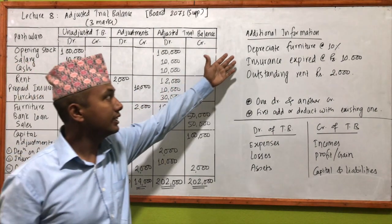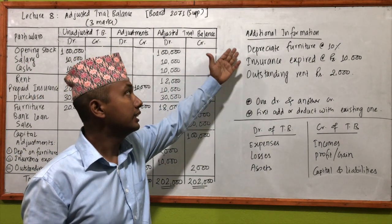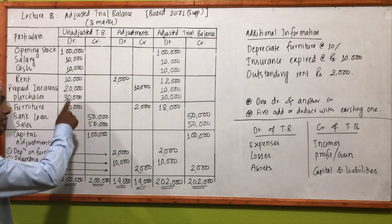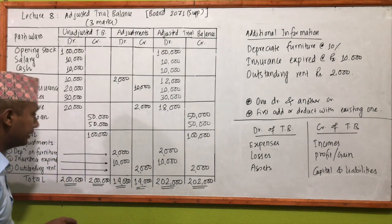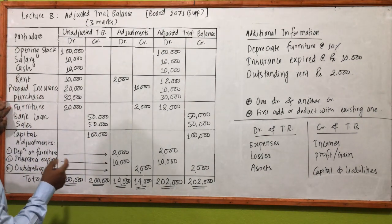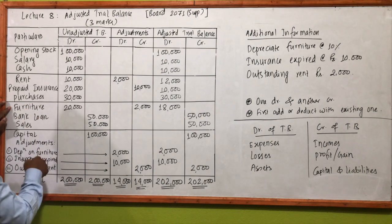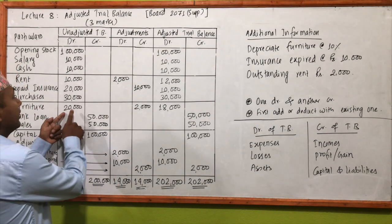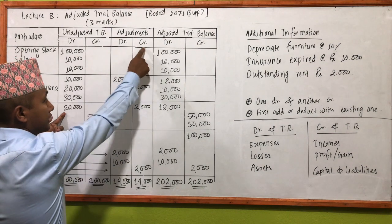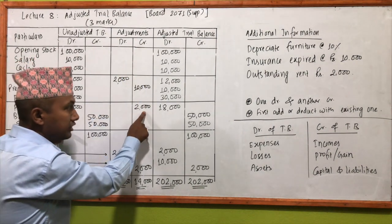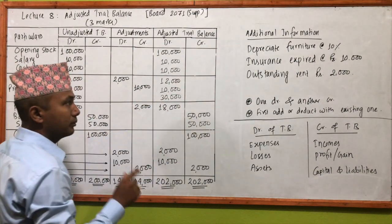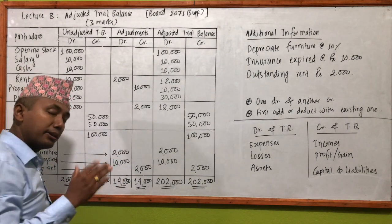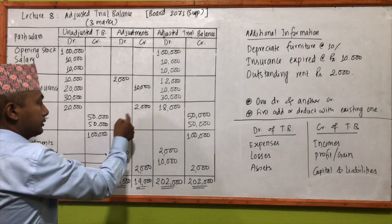Now we have adjustments. First, depreciation: depreciate furniture at 10%. That means furniture is 20,000, and 10% of 20,000 gives us the depreciation amount. For furniture, we have to record depreciation — debit depreciation, credit furniture.